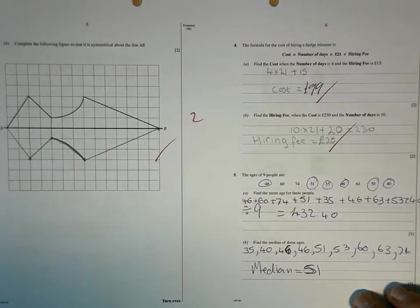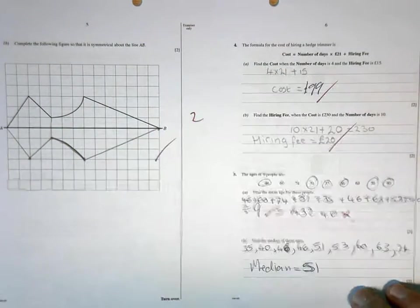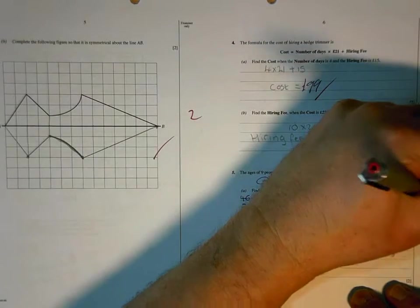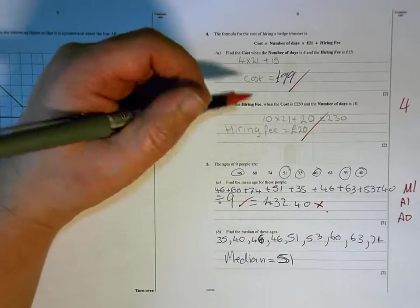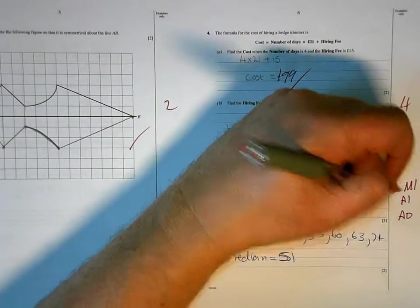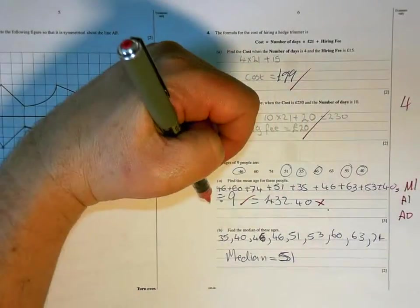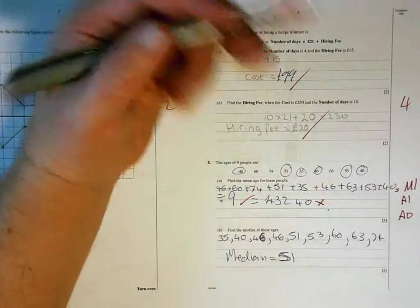For this one, you need to add them up and divide by 9, and when you add them up and divide by 9, you don't get £32.40, so your method is right, you're dividing by 9, but somehow your answer is wrong. I think probably what you've done is you haven't pressed equals before dividing by 9. You have to press equals there to work out what the total is and then divide by 9. Otherwise, the calculator only divides the last digit by 9.